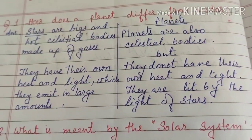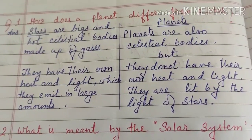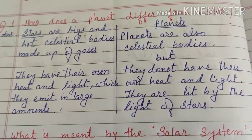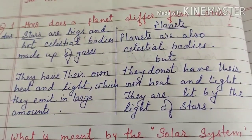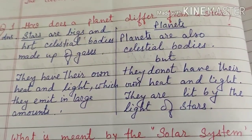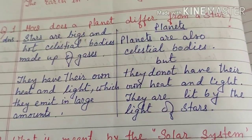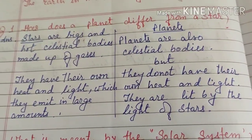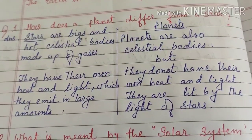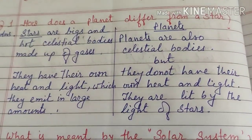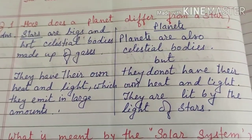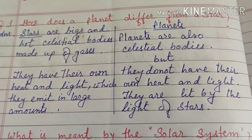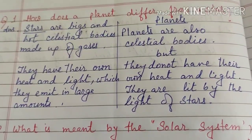Q&A from the NCERT book: How does a planet differ from a star? Stars are big, hot celestial bodies made up of gases that have their own heat and light, which they emit in large amounts. Planets are also celestial bodies, but they do not have their own heat and light — they reflect the heat and light received from the Sun.